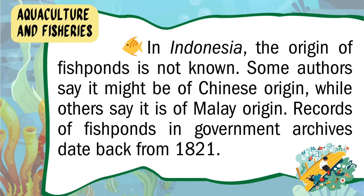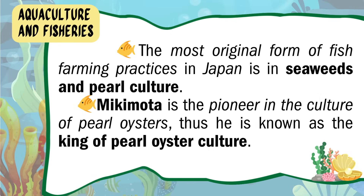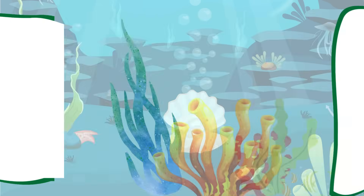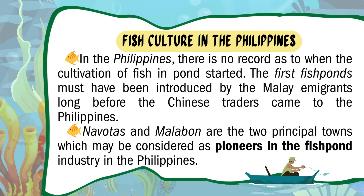In Indonesia, the origin of fishponds is not known. Some authors say it might be of Chinese origin, while others say it is of Malay origin. Records of fishponds in government archives date back from 1821. The most original form of fish farming practices in Japan is in seaweeds and pearl culture. Mikamoto is the pioneer in the culture of pearl oysters, thus he is known as the king of pearl oyster culture. In the Philippines, there is no record as to when the cultivation of fish in ponds started. The first fishponds must have been introduced by the Malay emigrants long before the Chinese traders came to the Philippines. Navotas and Malabon are the two principal towns which may be considered as pioneers in the fishpond industry in the Philippines.